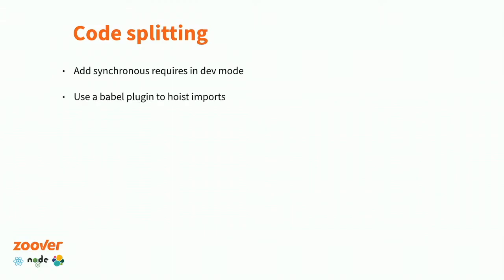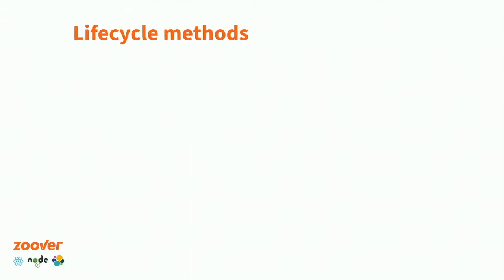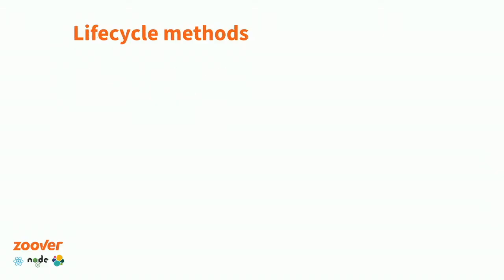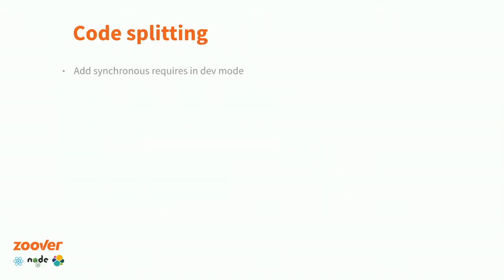We also wrote a Babel plugin that automatically adds a regular import every time it sees a dynamic import — again, in development mode. This basically replaces dynamic imports with an immediately resolved promise that is the result of the static import.